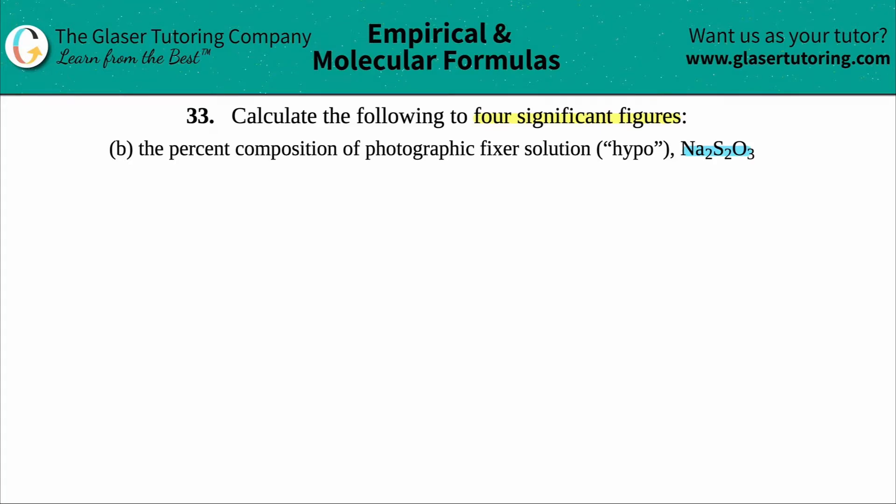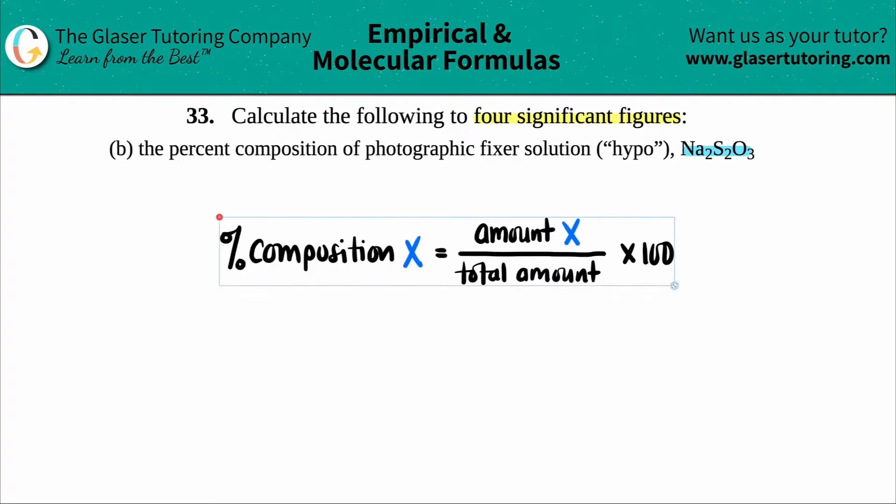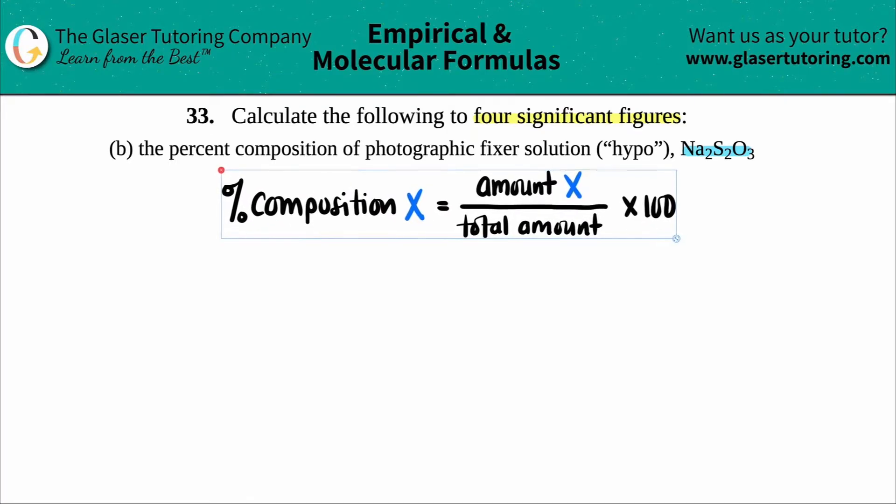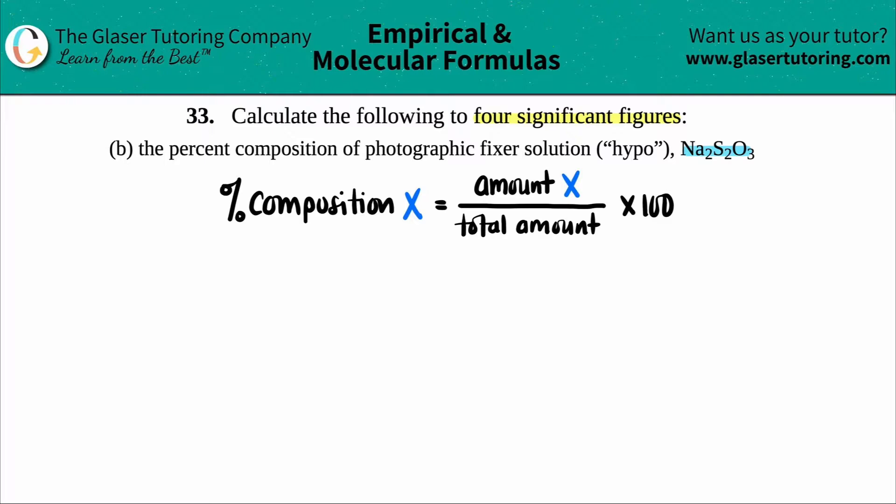Okay. So percent composition, right? I see the word percent in there. We know from math that percent is just something over something else times 100. So in chemistry world, it's this guy. So I'll just leave this up here. The percent composition of any element belonging to a certain compound is part divided by whole. It's the amount of that element in that compound divided by the total amount, and then just multiplied by 100.